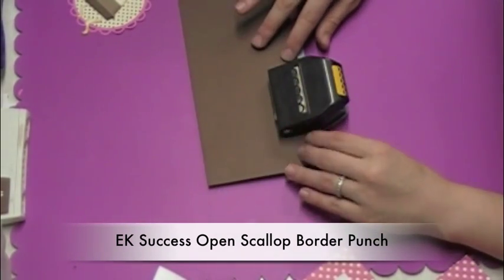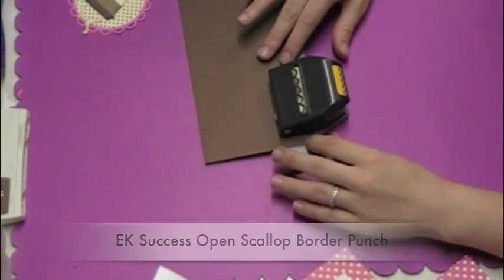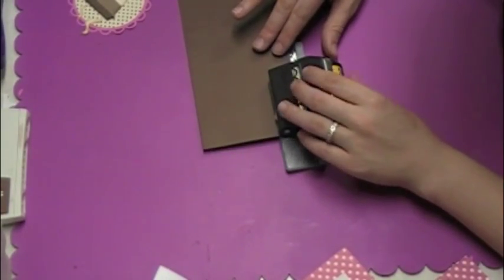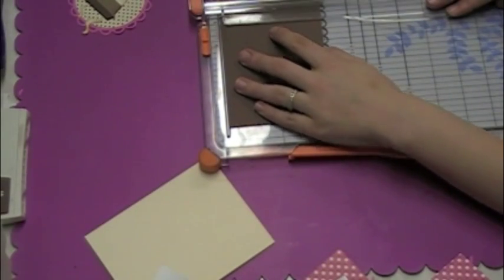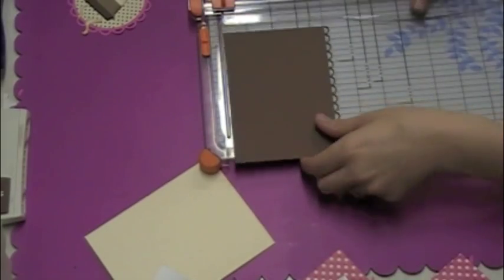So now I'm using the EK Success Open Scallop Border Punch. Very cute and I thought it matched that lacy circle very well. So after I punch it I'm just cutting off some of the excess here so I can work with it a little bit easier.